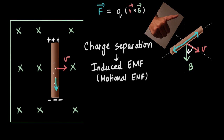Because there is a charge separation, an electric field is generated, and its direction is from the positive to the negative end. So apart from the Lorentz force acting on the electrons, there is one more force due to the electric field. For one electron, there is a Lorentz force acting downward and a force due to the electric field acting upward, because electrons tend to move towards the positive charge.